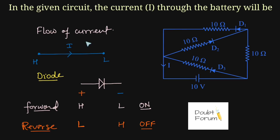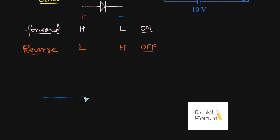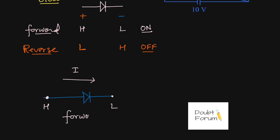Now, if we combine these two concepts — the flow of current as well as the biasing of diode — let me redraw a circuit. If this is a diode connected like this and a current I is flowing like this, it means this terminal is at higher potential than this terminal. So the potential of this point is higher and this point is lower, which means the diode is in forward biasing. So in forward biasing, this diode will behave like a closed circuit. This circuit is equivalent to a short because the diode is behaving like a closed circuit.